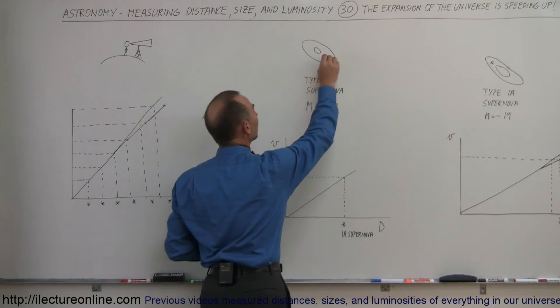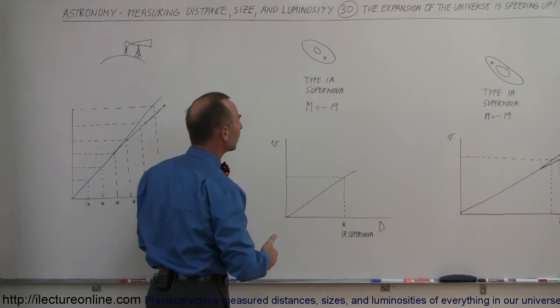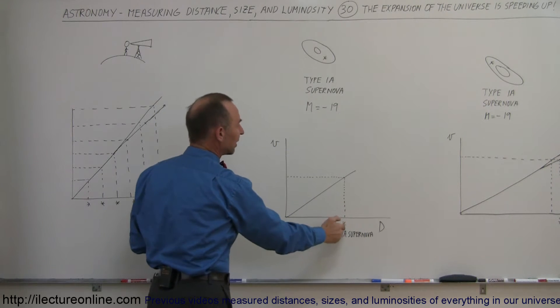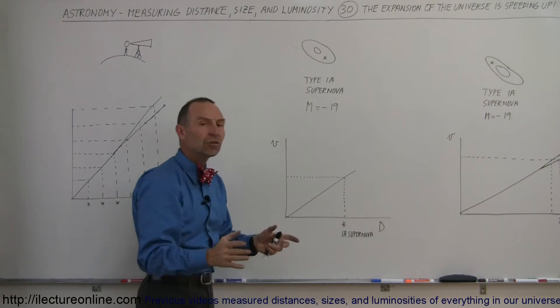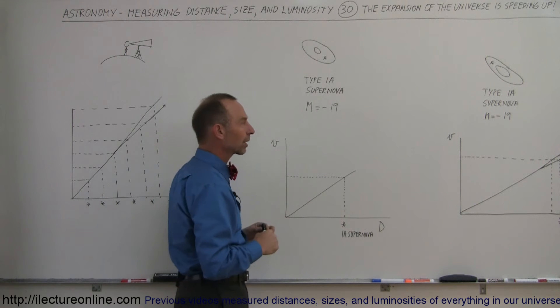Maybe we will see a type 1a supernova there, we measure the brightness of that supernova, and then we match the distance of that galaxy with the Hubble constant, and usually it's a dead match, not a problem. It is a nice confirmation that the Hubble constant is correct.